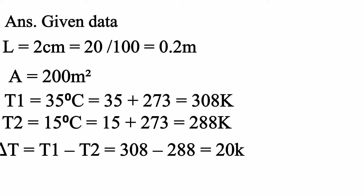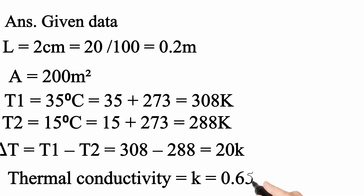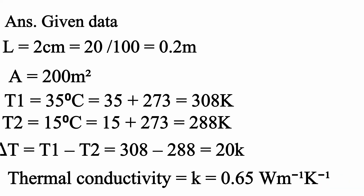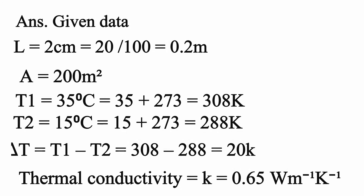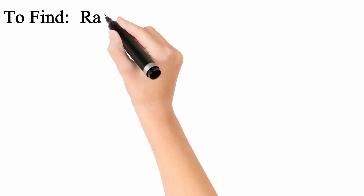Delta T फर्क होता है बाहर और अंदर के temperature में — inside 15°C है, outside 35°C है। Kelvin में change करने के बाद delta T = 308 minus 288 = 20 Kelvin। Thermal conductivity constant for concrete: K = 0.65 W per meter per Kelvin।